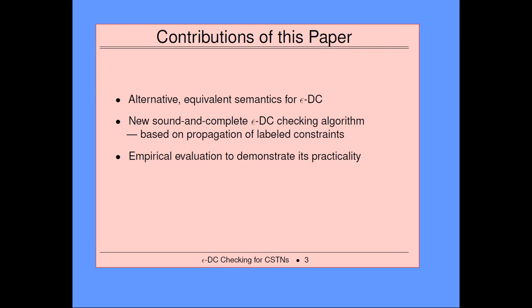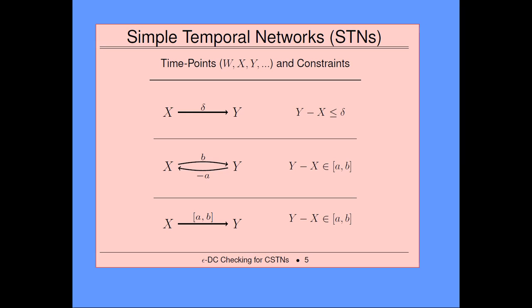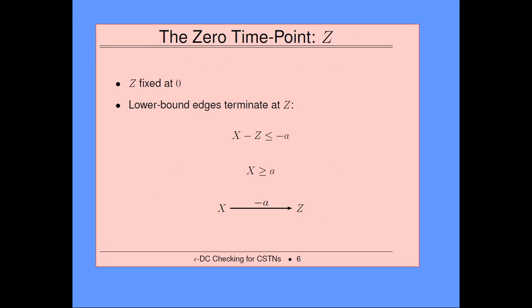Just to give you some background: simple temporal networks — probably most of you know about them. There are time point variables that take on real values, and the temporal constraints are binary difference constraints. So y minus x less than or equal to delta is represented in a graph as a directed arrow from x to y with length delta. You can have a duration constraint using two arrows, one for the upper bound and one for the lower bound. There's also a time point we usually call z, which is fixed at zero.